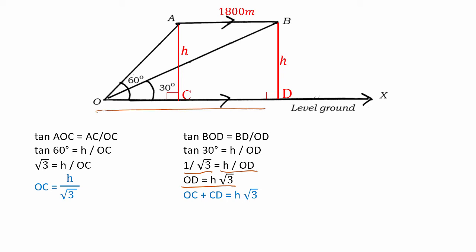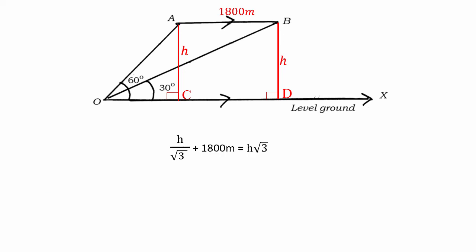O, D. This whole thing is composed of two parts: O, C, that part and C, D. Correct? O, C plus C, D equals H of root 3. And what is O, C? O, C now we need to calculate H of root 3. O, C and D we know it is 1800. In other words we can write this equation which is H by root 3 plus 1800 meter equals H of root 3.